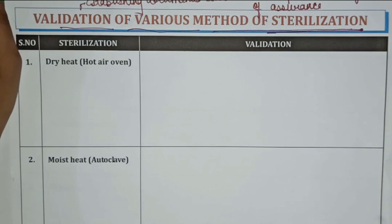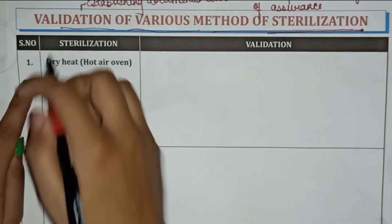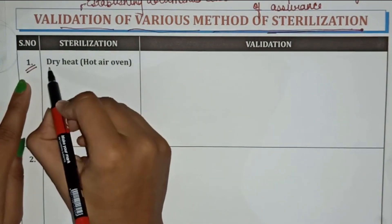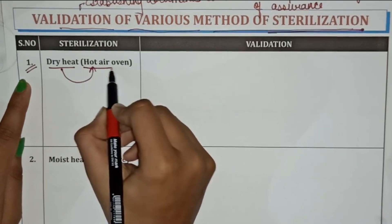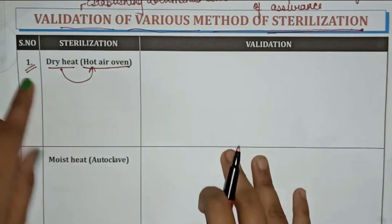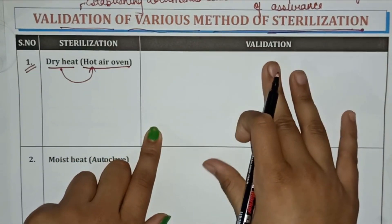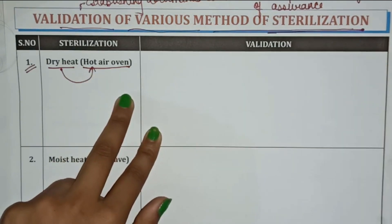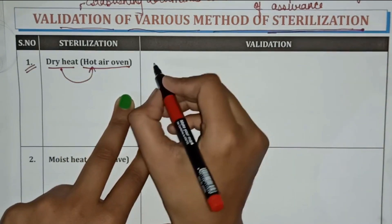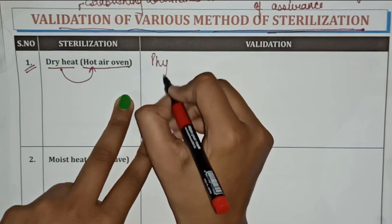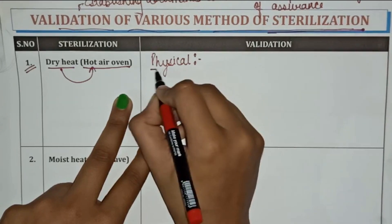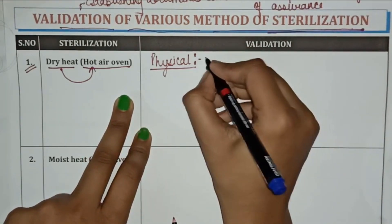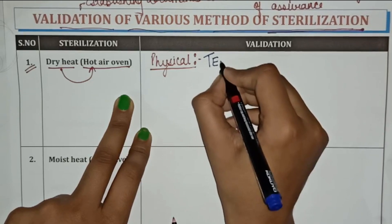There are different types of validation that are required for sterilization. The first one is dry heat sterilization, which is done through a hot air oven. The validation required for dry heat sterilization includes physical validation, which involves temperature recording.